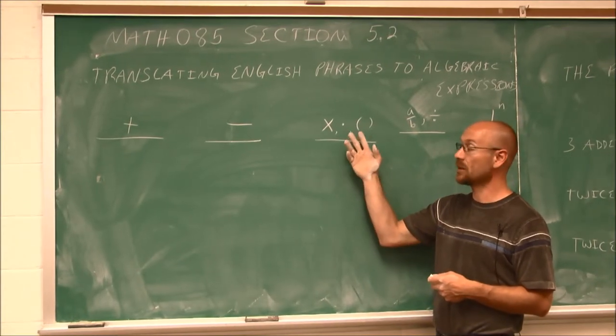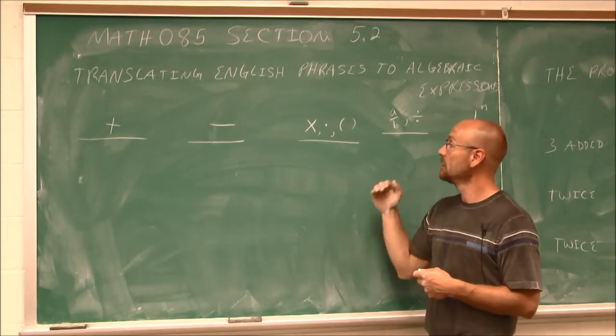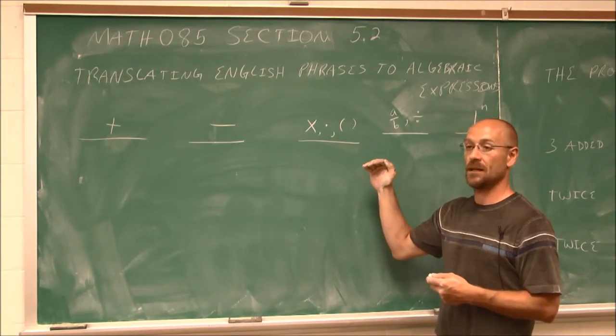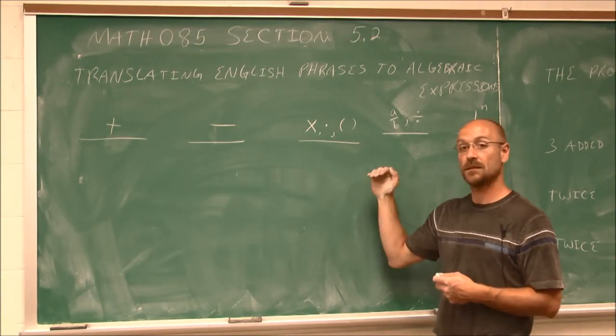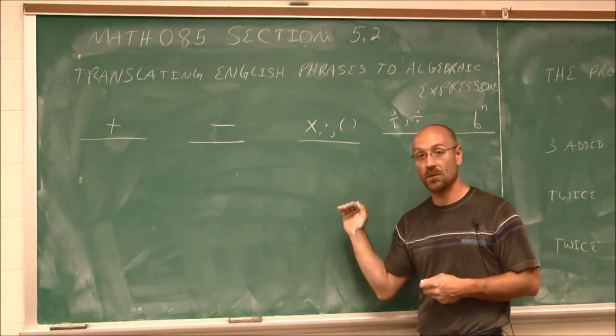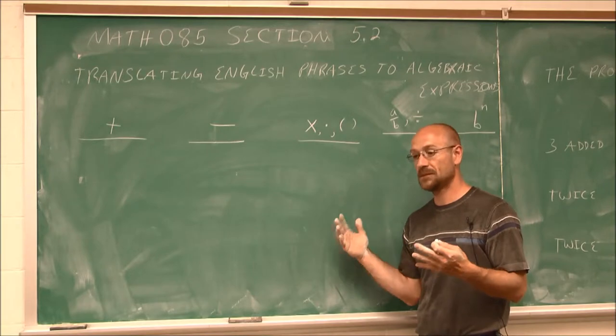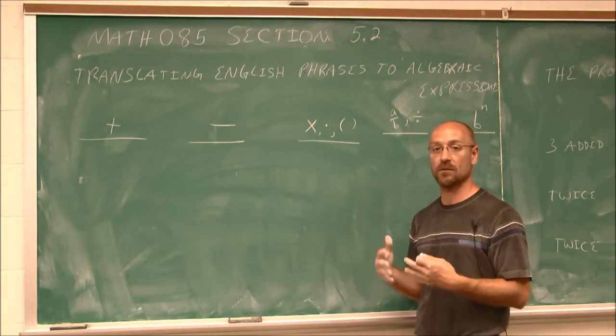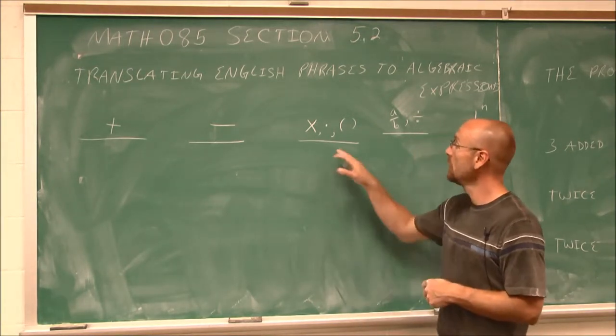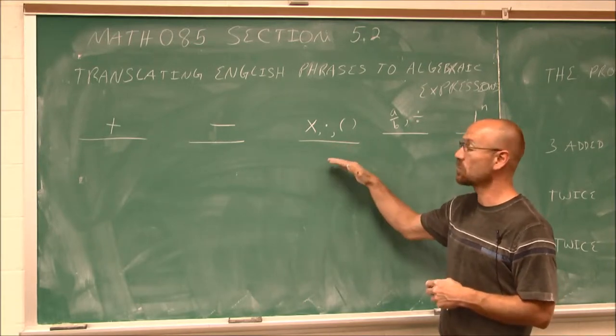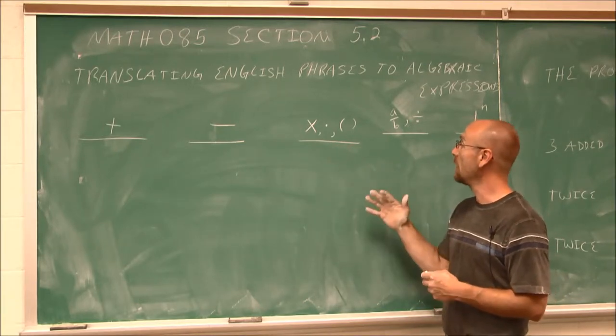Now here, we have different operators that indicate the same thing. Multiplication. We might have product, times, and the word of. So if I have five of six items, I would have a total of 30 items. So we look for those words to multiply, or to find the product, or times, or of.